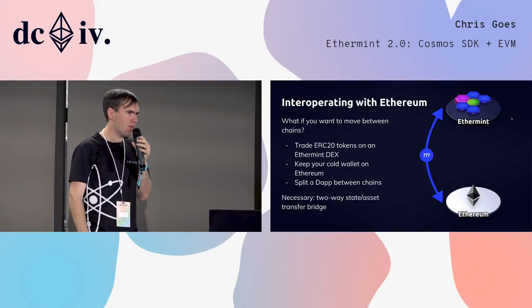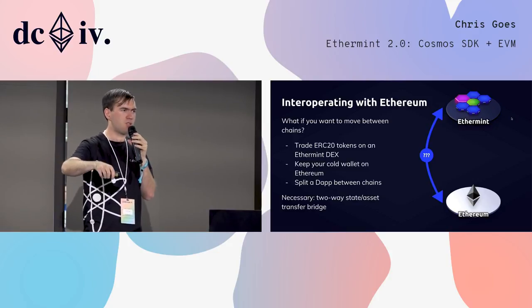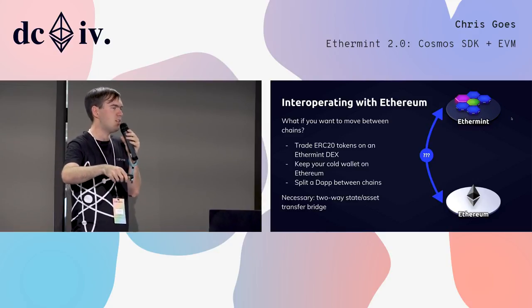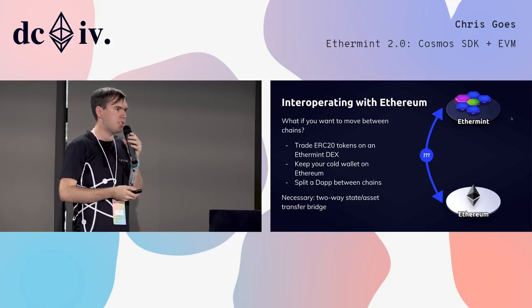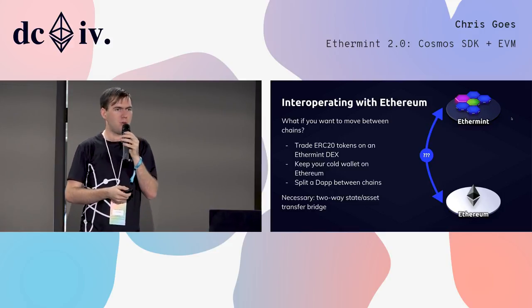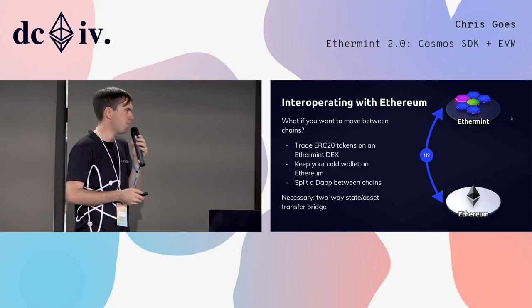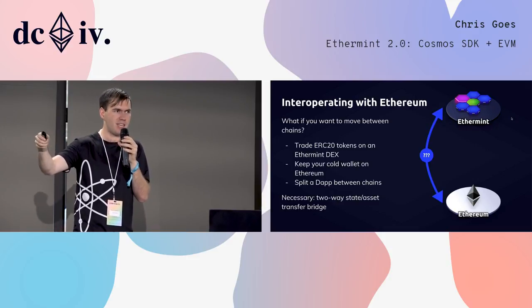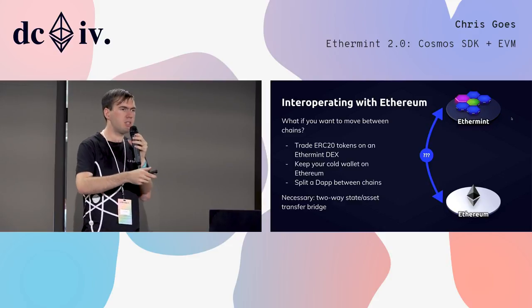But we come to a problem. What if we do that? You launch a new application-specific blockchain, but now your users are split — some people are on Ethereum, they have state on Ethereum: tokens, crypto collectibles. And some people want to start using the new Ethermint chain. We need a way to connect them. We need a way to transfer state and assets in a two-way bridge where it's possible both to deposit from Ethereum onto Ethermint, or onto a sovereign zone with the EVM module, and to withdraw from the sovereign zone back to the Ethereum main chain.